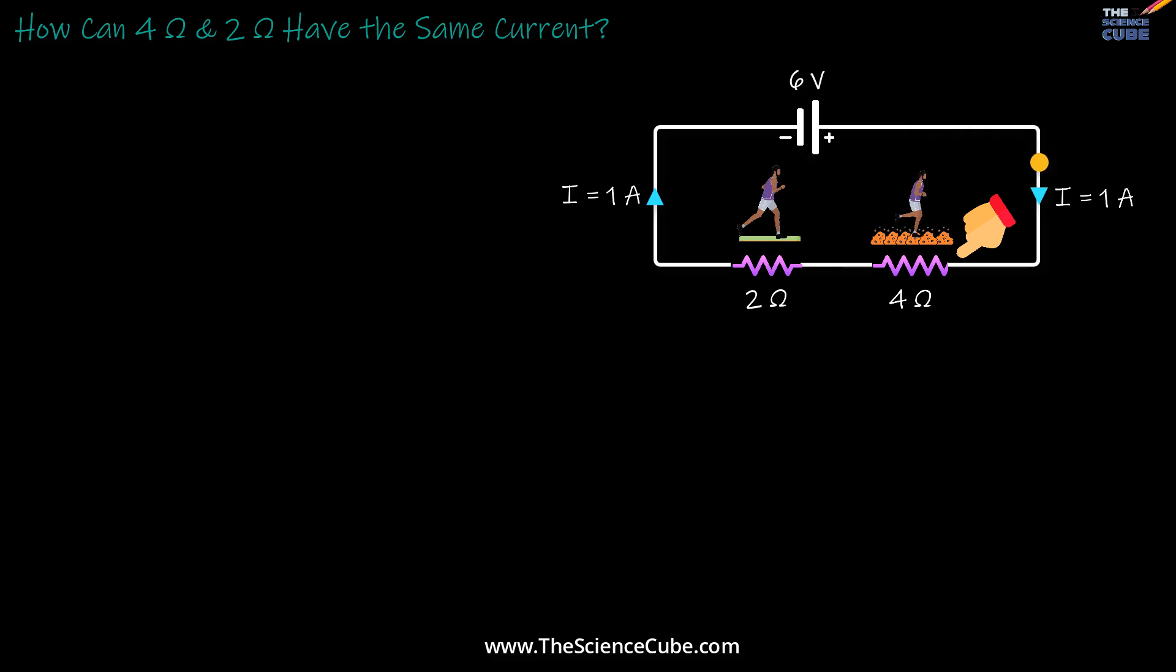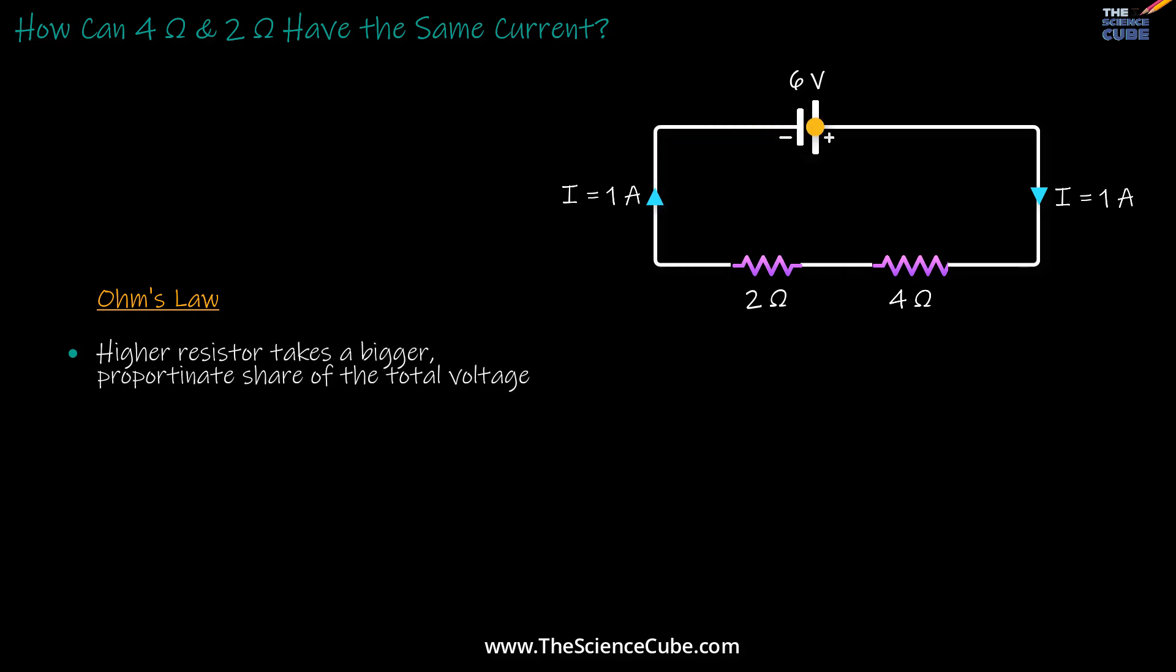So what's really going on here? Well, the answer lies in the magic of Ohm's law that ensures that a higher resistance takes a bigger share of the total voltage. That is, this resistor has a voltage drop of 4 volts, while this one drops only 2 volts. And this extra voltage drop is what makes everything tick.